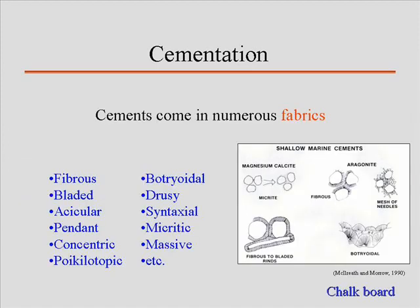Cements come in a whole bunch of different fabrics. Here's where things start to get a little tricky in terms of identifying different types of cements and different types of fabrics. Remember, cements are chemical precipitates, meaning they are driven by crystallographic rules — they must grow like crystals. Depending upon what cement is forming, you're going to get different types of crystals being produced. Sometimes they give rise to very obvious fabrics; sometimes they do not, depending upon what the mineral actually looks like.